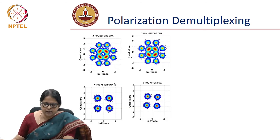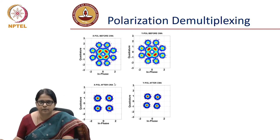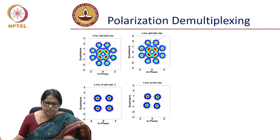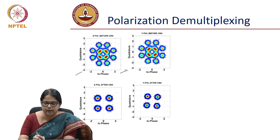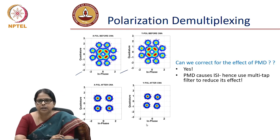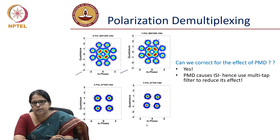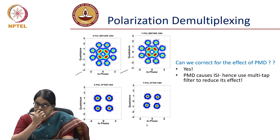Once convergence has occurred, you can use the converged values of Pxx and Pxy to reconstruct your data. Here is how the constellation looks before CMA and after CMA. Before the constant modulus algorithm, the X and Y polarizations are mixed. After you carry out the algorithm, the constellations separate. The question is: can you also use the same algorithm to correct for polarization mode dispersion?